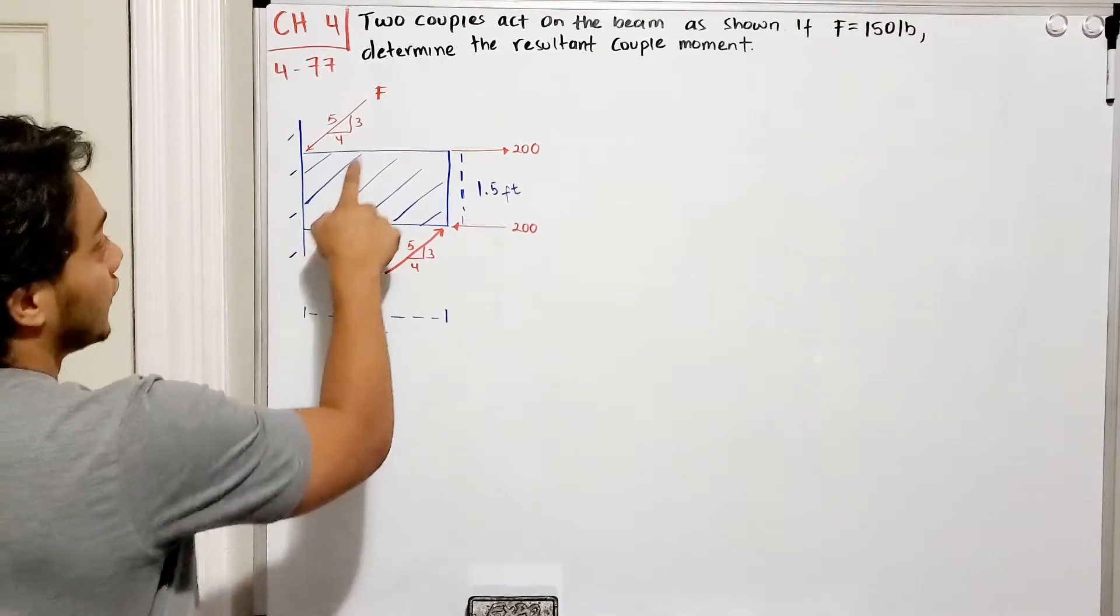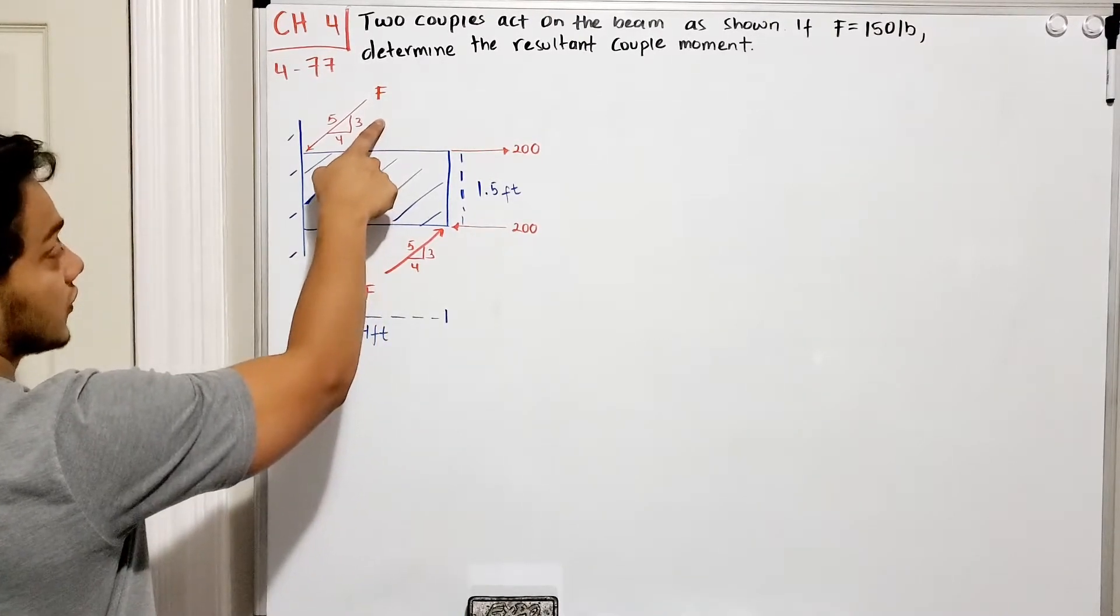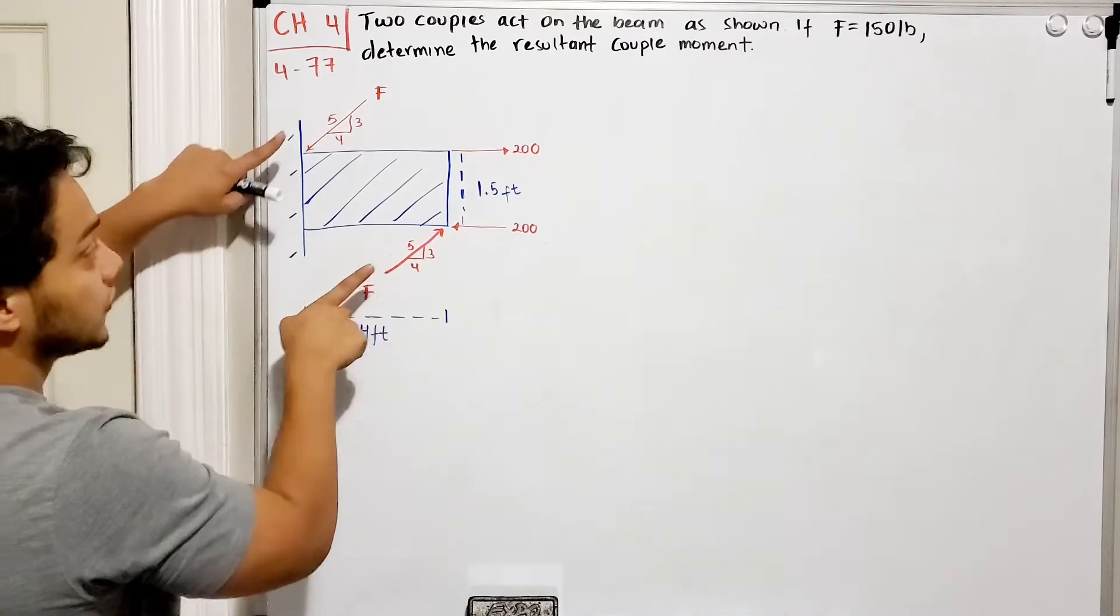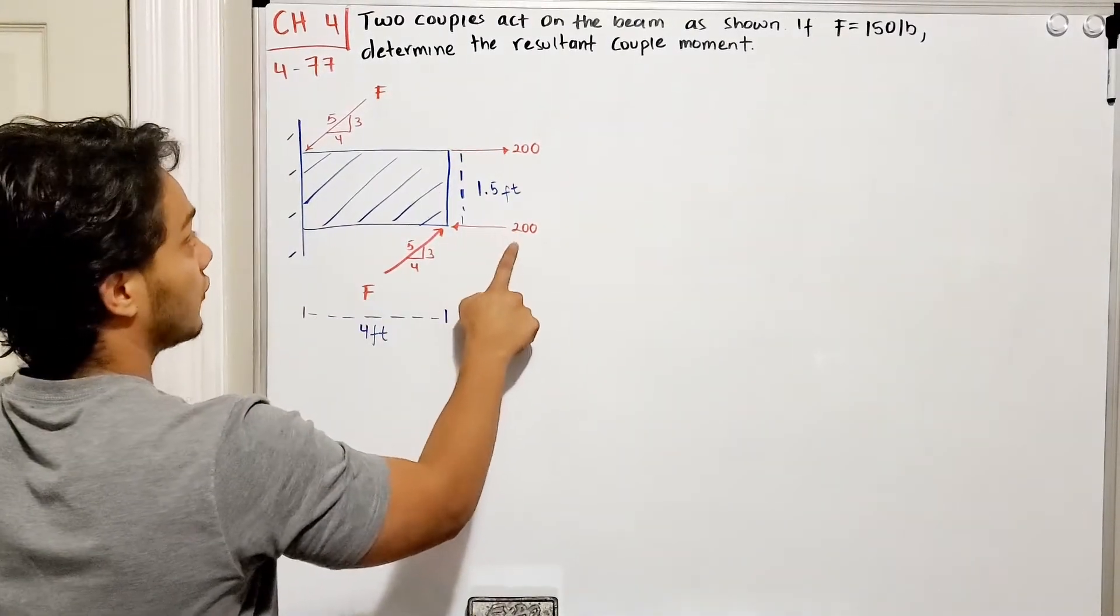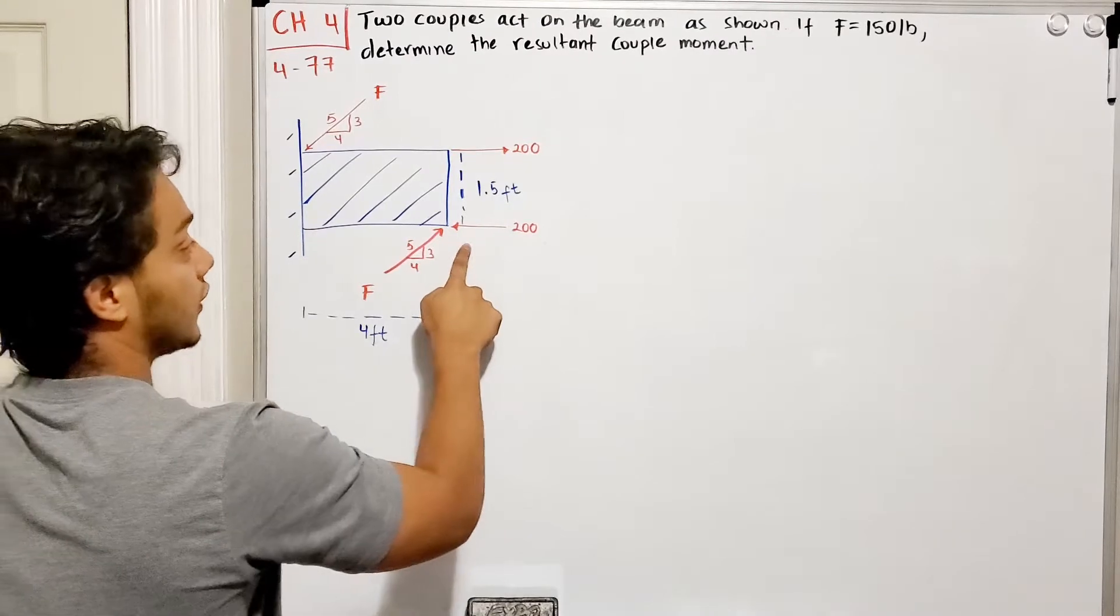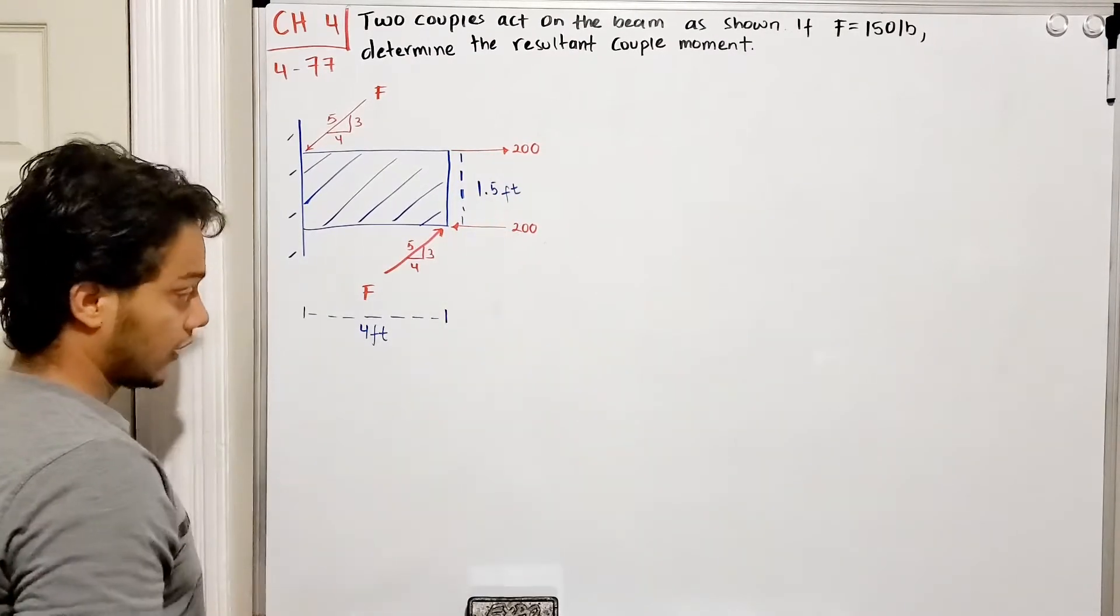We got our little beam with two couple forces in this direction and then we had these 200 pound forces, one going to the left and the other one to the right.